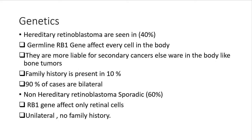This is an autosomal dominant disease caused by a mutation in the RB gene 1. If the cell has the mutated RB gene, its expression is always present. The penetrance of the disease is 100% — if you have the gene, the cell is mutated, it is a cancerous cell, and it will form retinoblastoma.